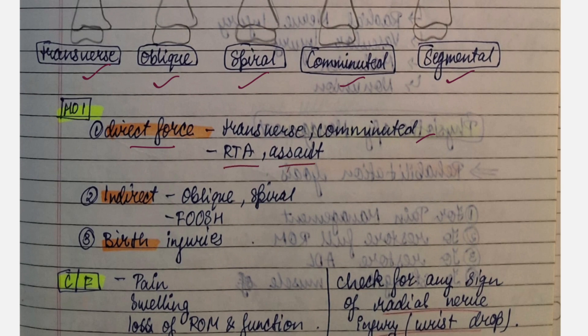Indirect fracture, which consists of oblique or spiral, happens due to fall on outstretched hand. Third can be due to birth injuries.